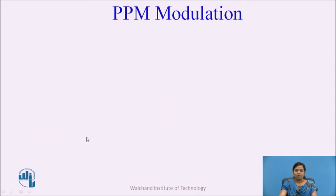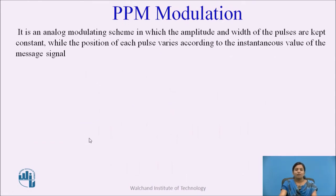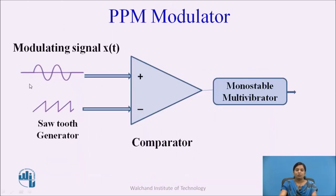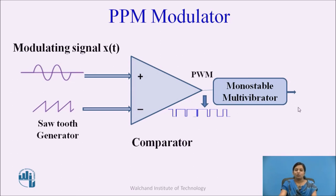Next is pulse position modulation. It is the analog modulating scheme in which the amplitude and width of pulses are constant, while the position of each pulse varies according to the instantaneous value of the message signal. In the PPM modulator block diagram, a comparator takes the modulating signal and sawtooth signal as inputs to produce a PWM signal. This PWM signal is then applied to a monostable multivibrator using IC555, and at its output we get the PPM — the pulse position modulated signal.